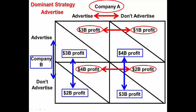In both situations, it's better for Company B to advertise, so Company B also has a dominant strategy to advertise. The resulting payout is three billion dollars in profit for each company.